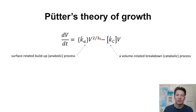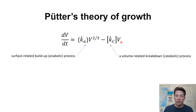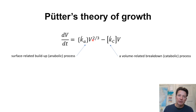Here is the growth model of Putter written in this way, where we have the rate of change in volume — that's what Putter's working with, the volume of the organism — and he's got this rate of change as a difference between two terms. The term on the left is related to build-up, the anabolic process. The term on the right is related to breakdown, the catabolic processes. So the processes making the organism build up are happening proportional to the surface area — volume to the two-thirds — with a parameter Ka, and the breakdown process is happening proportional to the volume with a volume-specific parameter Kc.